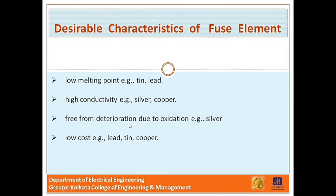It should be free from deterioration due to oxidation — for example, silver. And it should be of low cost — for example, lead, tin, and copper. No material possesses all these characteristics. For instance, lead has a low melting point but high specific resistance and is liable to oxidation. Similarly, copper has high conductivity and low cost but oxidizes rapidly. Therefore, a compromise is made in the selection of material for a fuse.